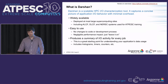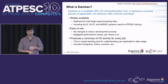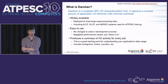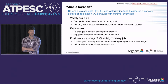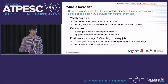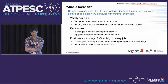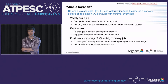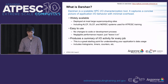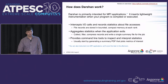Darshan is easy to use — it doesn't require any changes to your code or development process. It has negligible performance impact, which lends itself to full-time deployment at facilities since it's not perturbing applications. It produces a summary of IO activity for each job it instruments, including statistics and counters like how many IO operations are issued and how much time was spent doing various operations.